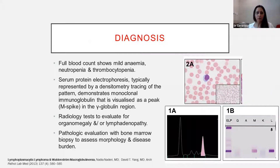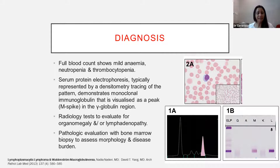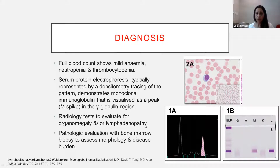How do we diagnose Waldenström's macroglobulinemia? Sometimes for many years it goes undiagnosed because the patient is asymptomatic. If a patient develops tiredness, fatigue, or other symptoms, or they have a routine blood count, it can be discovered — they might have low haemoglobin, low platelet count, or low neutrophil count. Serum protein electrophoresis to look for the IgM — what we call the M-spike — is a very important diagnostic tool available to us.